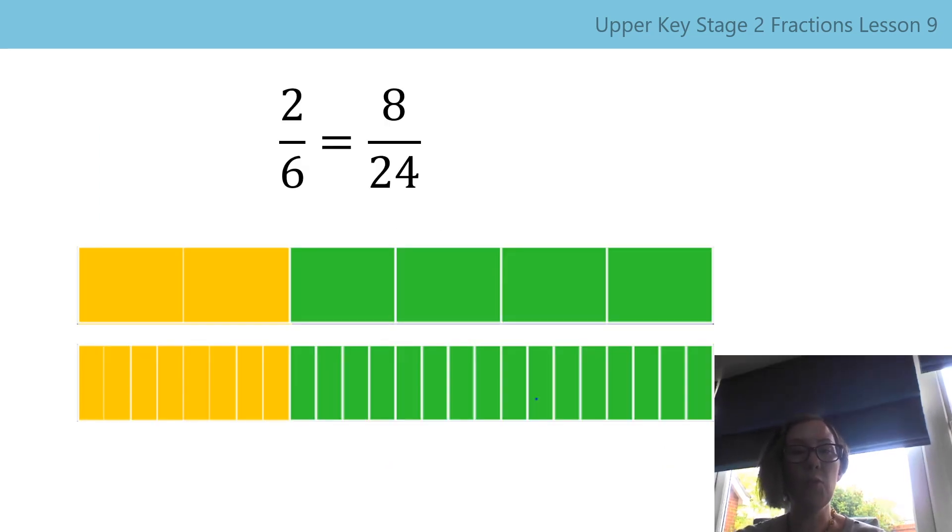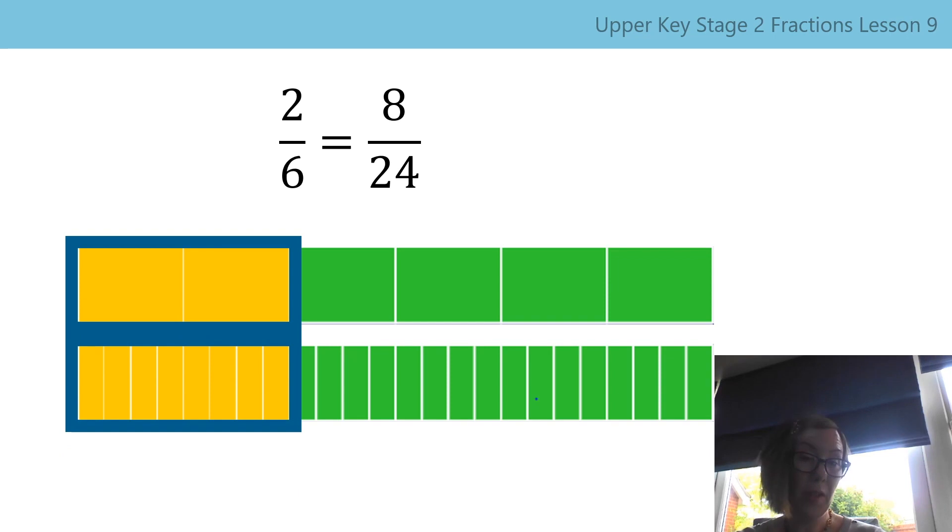Just to reinforce what we just looked at there. Let's compare it in a different type of diagram. So there's our two sixths again. How can you see the six? Yes, the six is the top line. And two of those six parts are coloured yellow. The bottom part is divided into 24. I promise you, you can check though if you want. And the ones that are shaded yellow, there's eight of those. And you can see that they are of equal size.